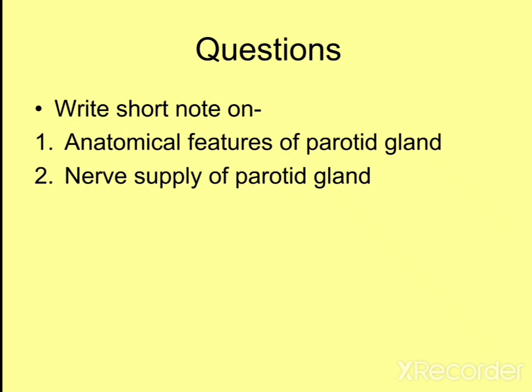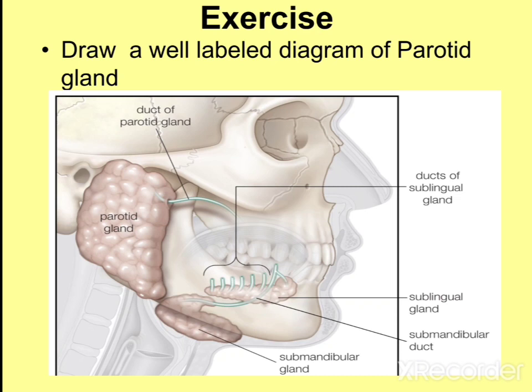The exam questions related to this chapter include writing a short note on the anatomical features of the parotid gland, covering all the structures discussed, and the nerve supply of the parotid gland, including the parasympathetic and sympathetic innervations. For an exercise, you should draw and label a diagram of the parotid gland. This completes the topic of the parotid gland. Thank you.